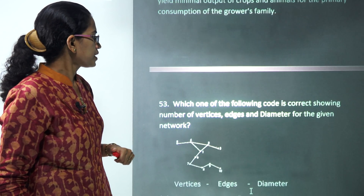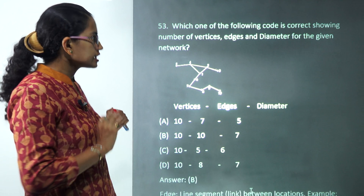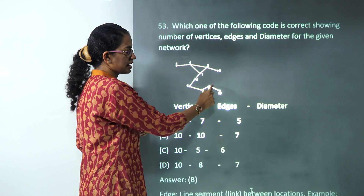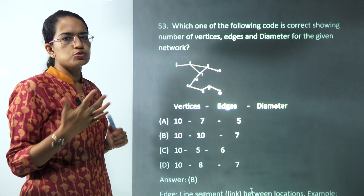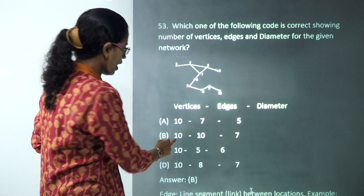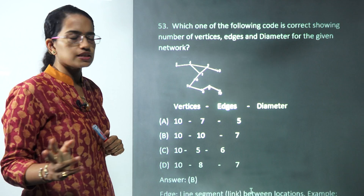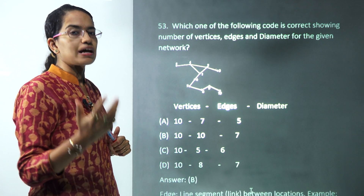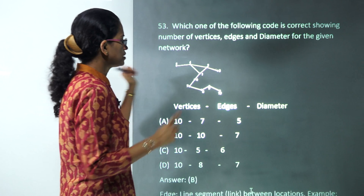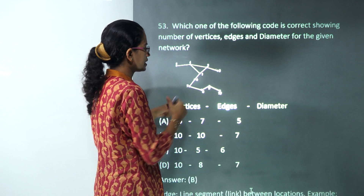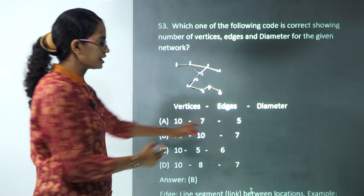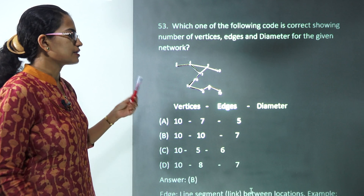The next question covers vertices, edges, and diameter — a very interesting question from network geography or transport geography. Vertices are already marked and you can count them: there are 10. Edges can also be counted: again 10. Diameter is the shortest distance between the two most distant points; here those are points 5 and 10, and the shortest distance is 1-2-3-4-5-6-7, so the diameter is 7.